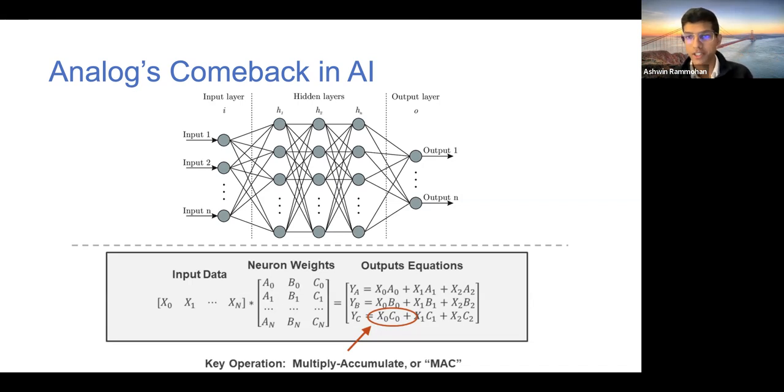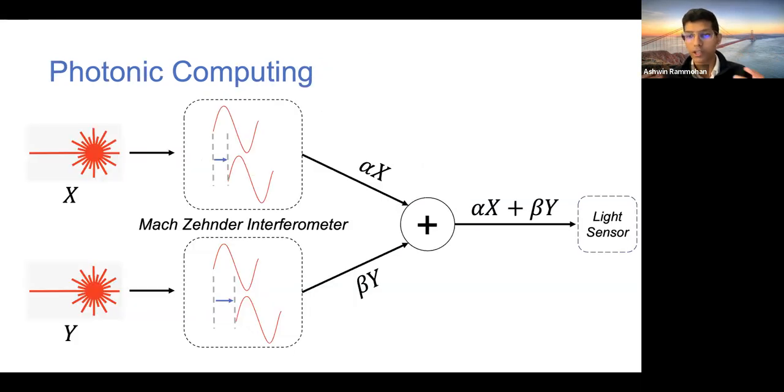And so we've seen a resurgence in analog computers that are more optimized for their application than traditional digital computers. And I'll end with just an example of one really cool modern computing theory in analog computing, which is this idea of photonic computing.